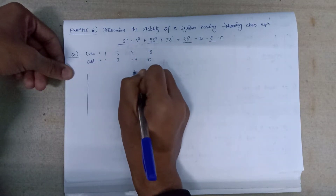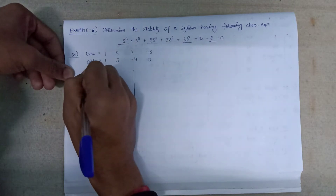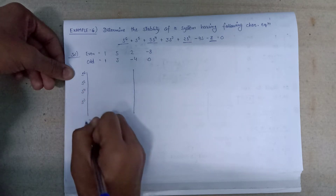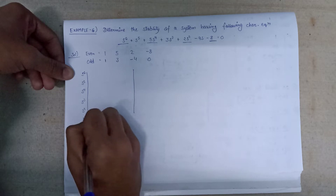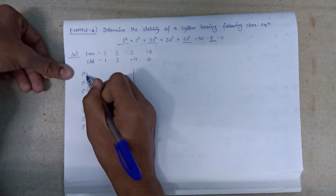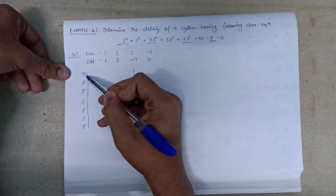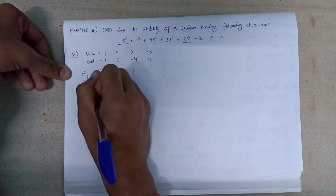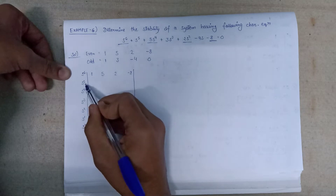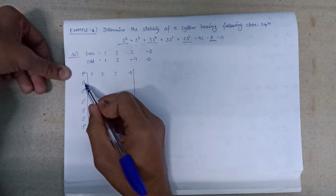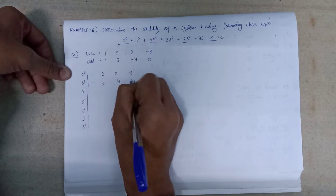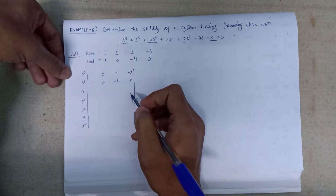We will now form the Routh array with rows for s⁶, s⁵, s⁴, s³, s², s¹, and s⁰. Since the highest power is s⁶, we write the even coefficients first: 1, 5, 2, -8. Then the odd coefficients for the s⁵ row: 1, 3, -4, 0. We then perform cross multiplication to fill the further elements.